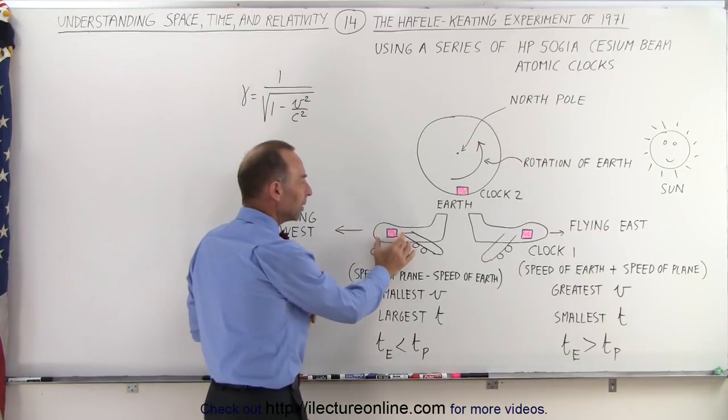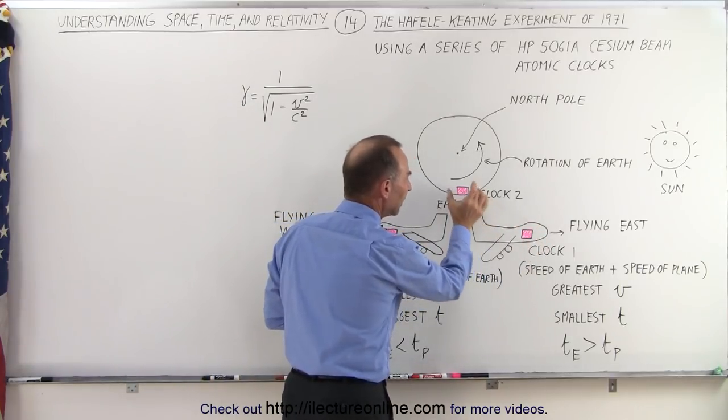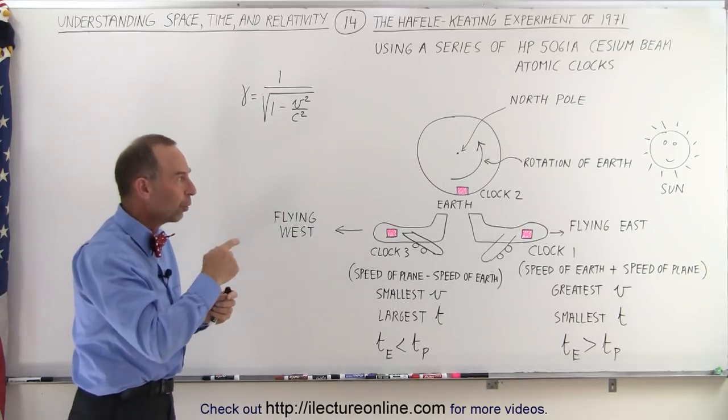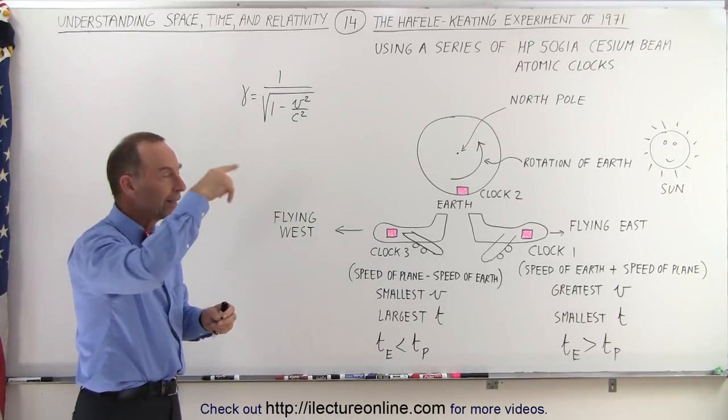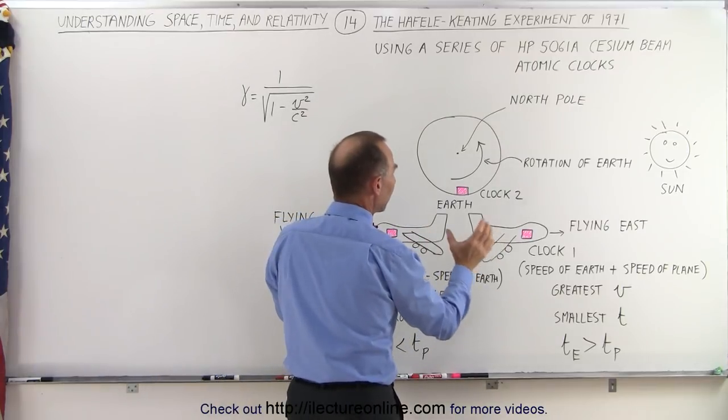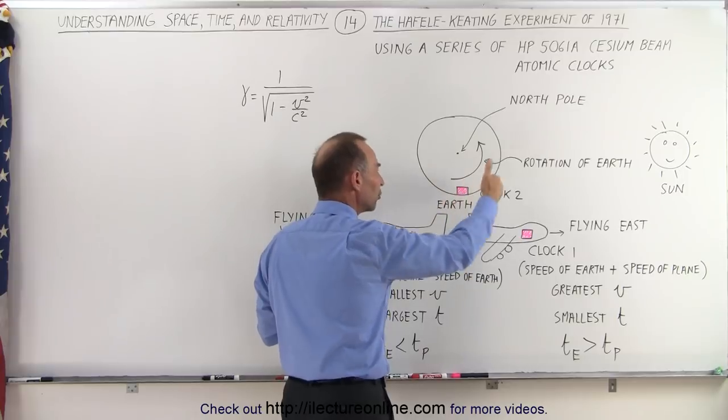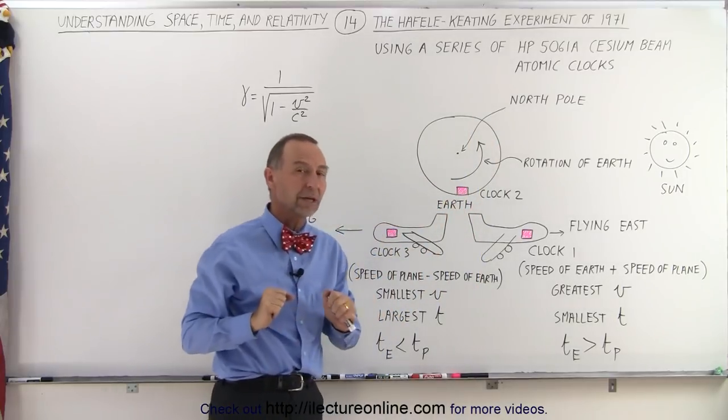They put four in one airplane, four in another airplane, and four on the Earth as a reference. Now, of course, the Earth rotates around its axis, so relative to the motion of the plane moving in one direction or the other, the Earth moves as well. We have to take all that into account.